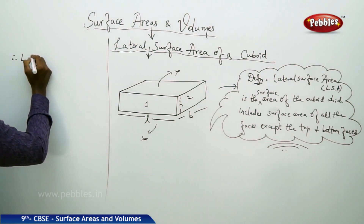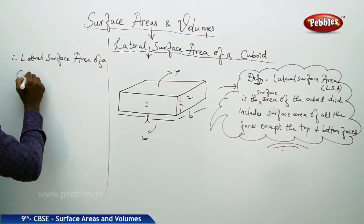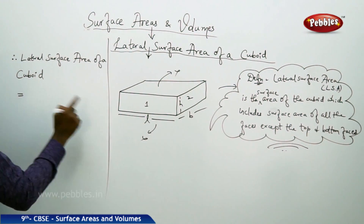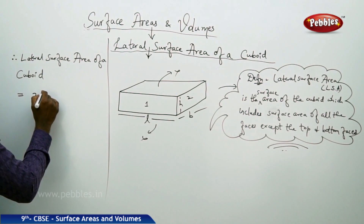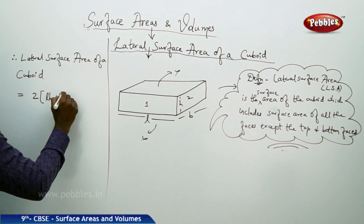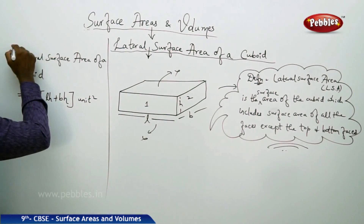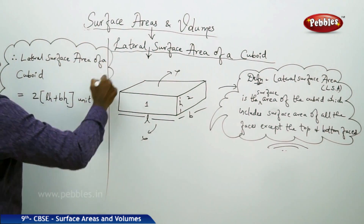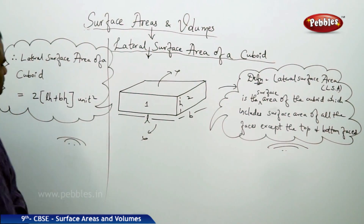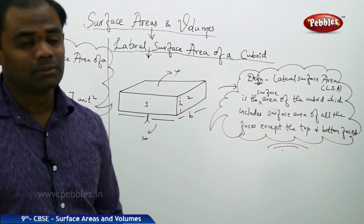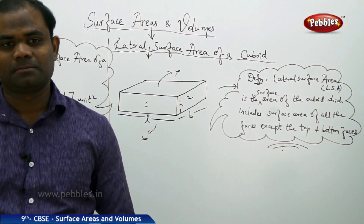The lateral surface area (LSA) is the area of the cuboid which includes all faces except the top and bottom. So we have LH and LH, and BH plus BH, giving us 2 times (LH + BH). We do not include the top and bottom, which is LB. So lateral surface area equals 2(LH + BH). The top and bottom faces are exempted.